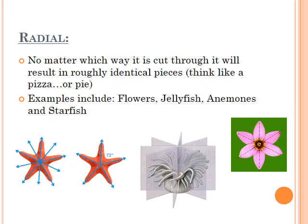The second type is radial. No matter which way it's cut through, it will result in a roughly identical piece. Think like a pizza, or maybe even a pie — you cut from the center and work your way out, and this will almost always give you a somewhat roughly identical piece.